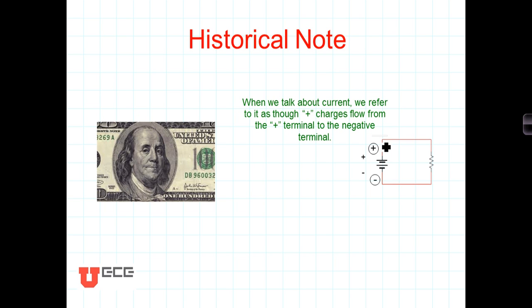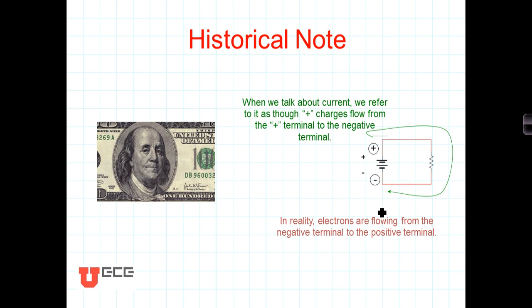So we have this legacy convention that describes current in terms of positive charge flowing from the positive terminal to the negative terminal. In reality, it's the negative charged electrons — which are smaller and less tightly bound to the atom — that flow from the negative terminal to the positive terminal. This legacy has been going on for well over 200 years.